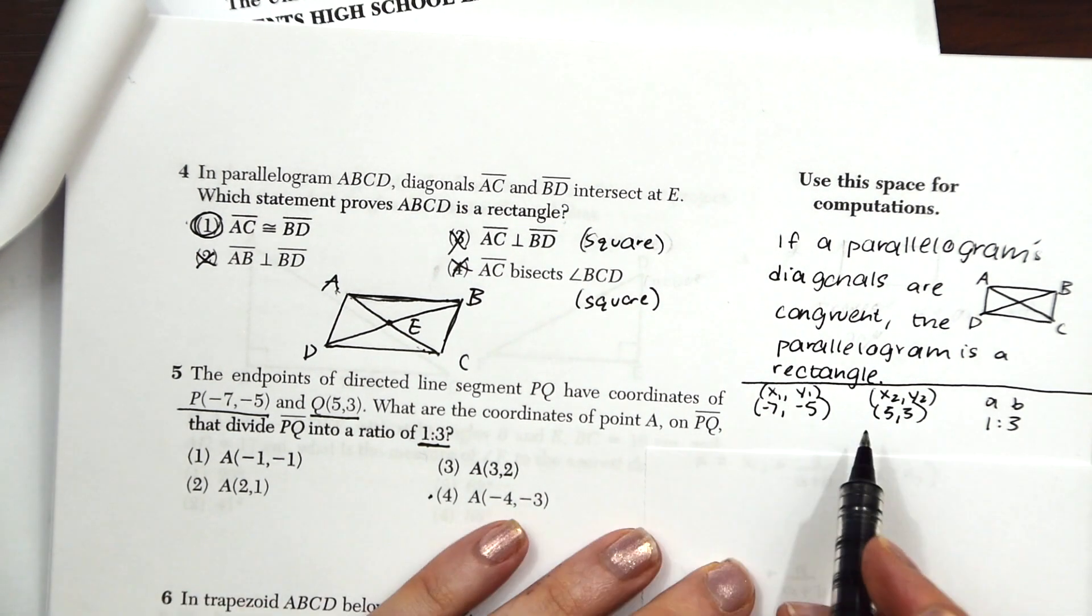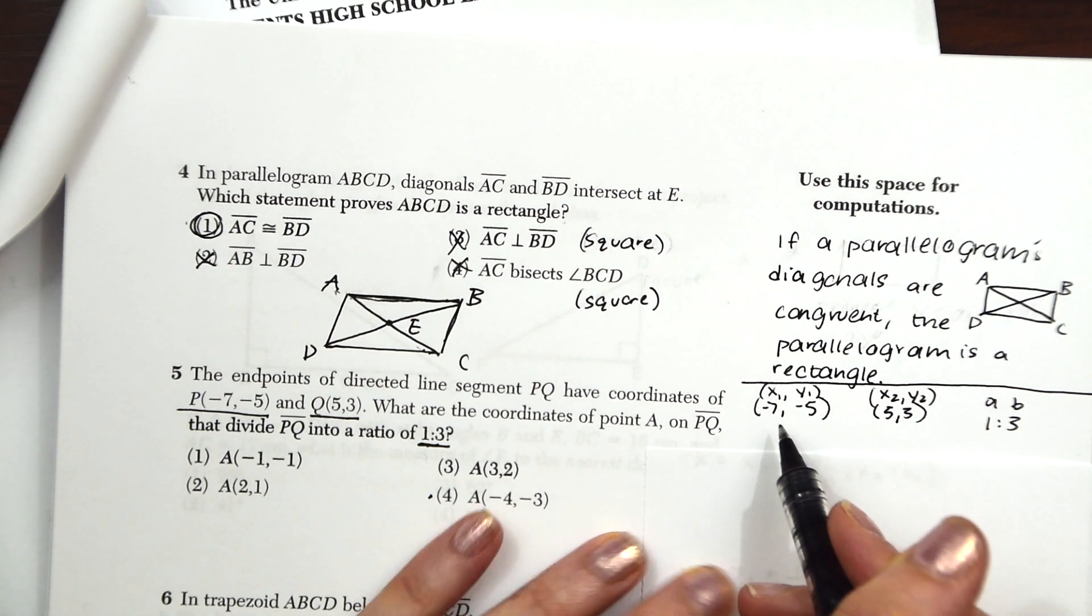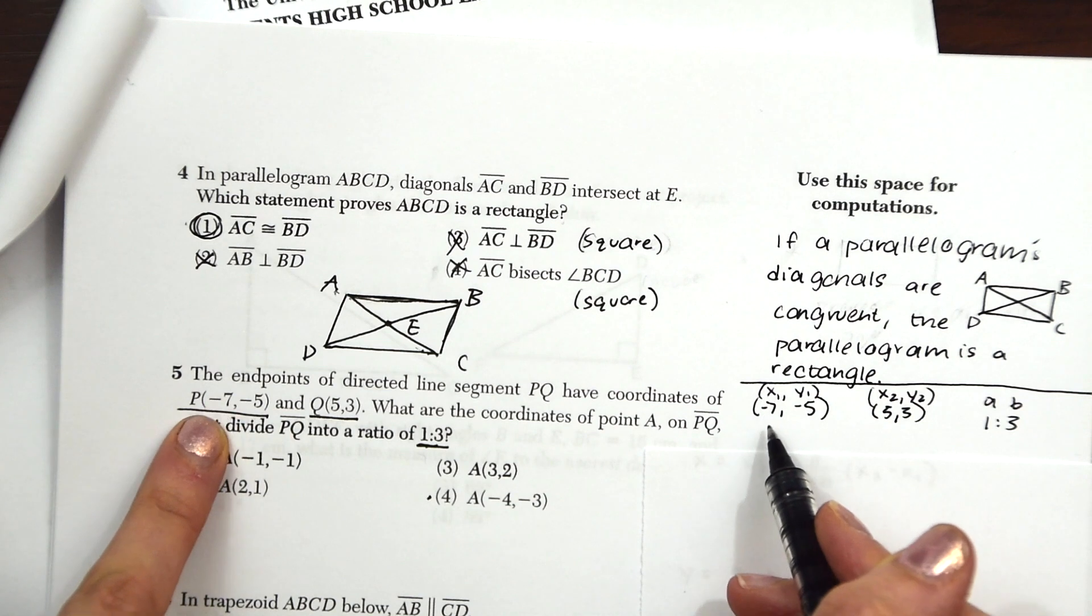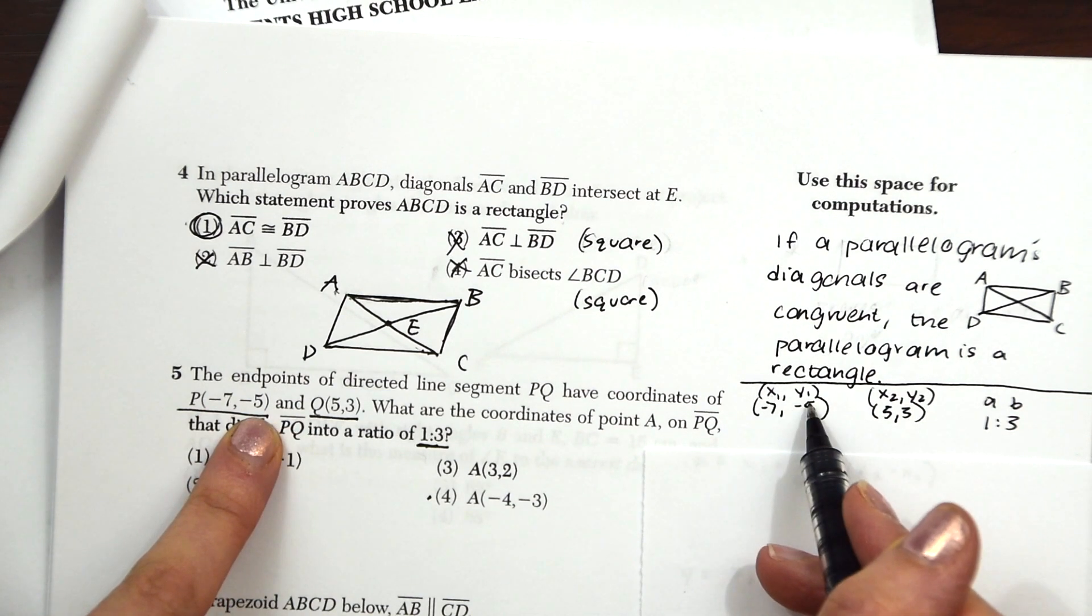So I just rewrote over here, we have x1, y1, negative 7, negative 5. So that first coordinate we're given, P, that's going to become x1, y1.